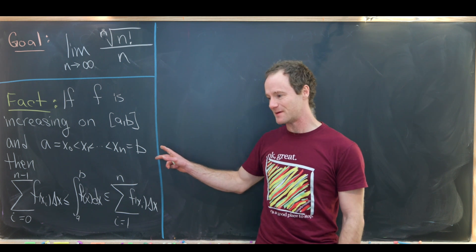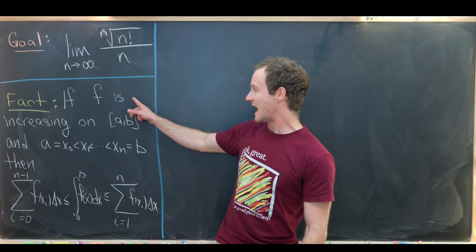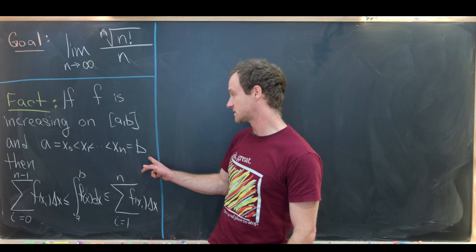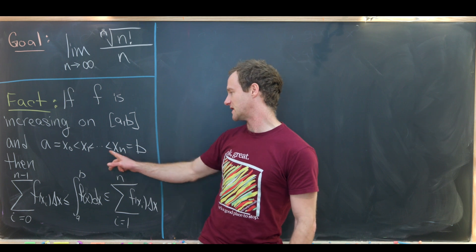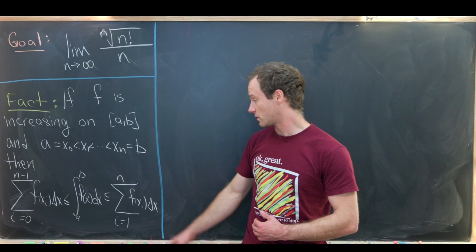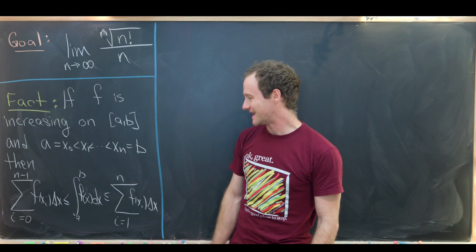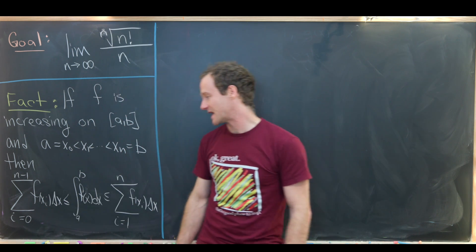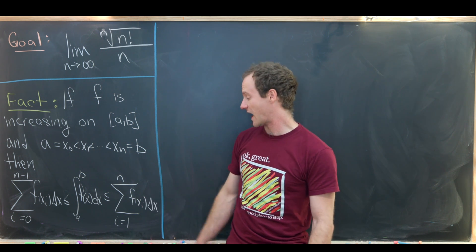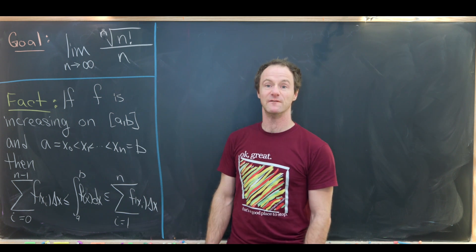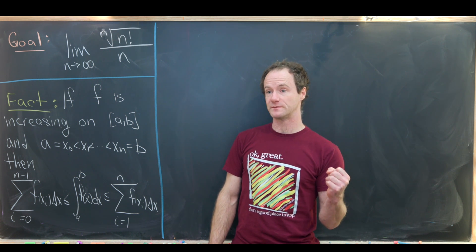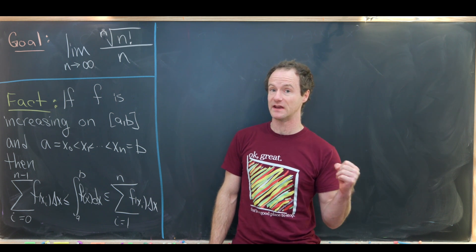We're going to use the following fact, which is not immediately obviously helpful, but we'll see how it's helpful. If f is an increasing function on the interval [a, b], and we partition this interval into subintervals x₀ to x₁, x₁ to x₂, all the way up to x_{n-1} to x_n, then the left-hand Riemann sum is less than or equal to the value of the integral, which is less than or equal to the right-hand Riemann sum.